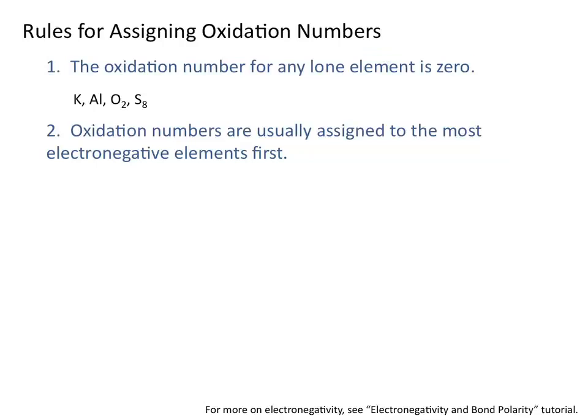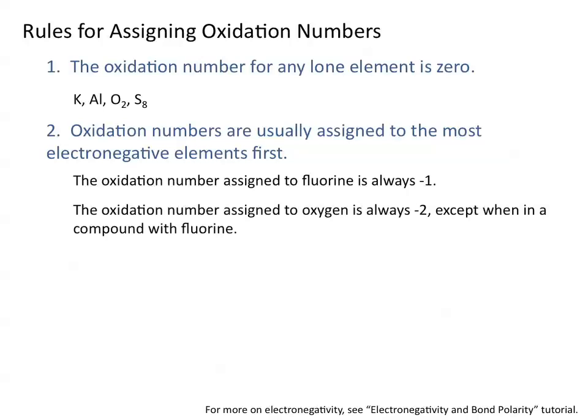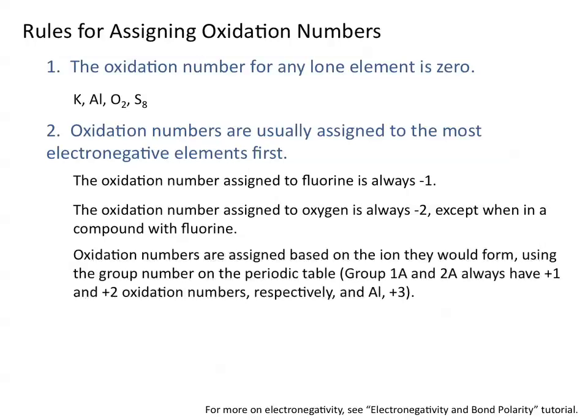Oxidation numbers are usually assigned to the most electronegative elements first. This means that the oxidation number assigned to fluorine is always negative 1. The oxidation number assigned to oxygen is always negative 2, except when in a compound with fluorine. Oxidation numbers are assigned based on the ion they would form, using the group number on the periodic table.